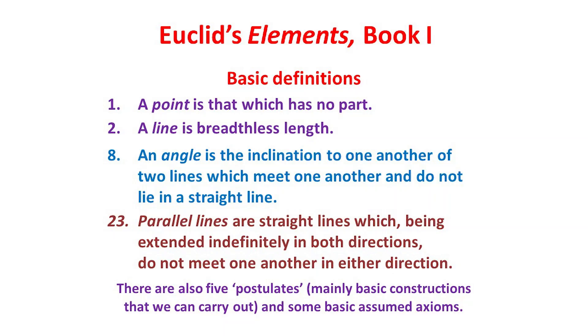Book one of the Elements deals with geometry — the geometry of points and lines, angles, parallel lines and triangles — building eventually to a proof of the Pythagorean theorem for right-angled triangles. Euclid starts by defining some basic terms. Here are his definitions of an angle as the inclination to one another of two lines which meet but which don't lie in a straight line, and of parallel lines which never meet one another however far we extend them. There are also five so-called postulates, mainly basic constructions that we can carry out, and some assumed logical axioms. We'll return to these later.